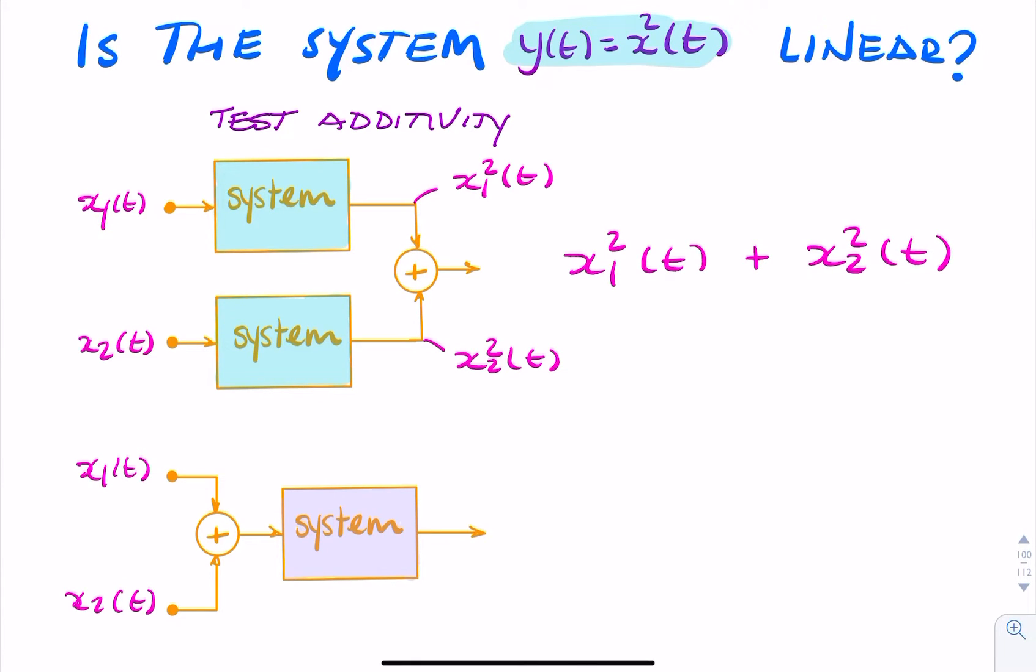And then I do that again, but this time I add the signals together before entering into the system. So at this point here, I have x1 of t plus x2 of t.